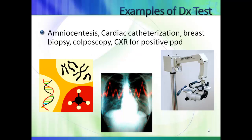Examples of diagnostic tests include amniocentesis for fetal chromosomal anomalies, cardiac catheterization, a breast biopsy of a lesion identified on a screening mammogram, a colposcopic exam and biopsy for a woman with an abnormal pap smear, and a chest x-ray for an individual with a positive PPD skin test for tuberculosis. A chest x-ray is more costly than a PPD skin test; colposcopy and biopsy are more expensive than a pap smear; and MRI and breast biopsy are more expensive than a mammogram.